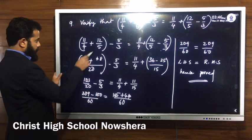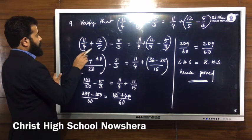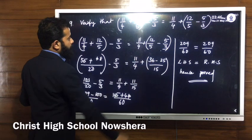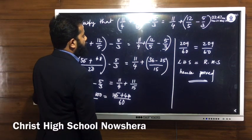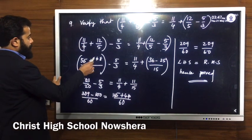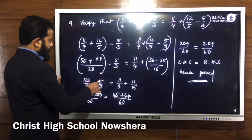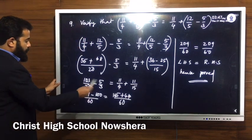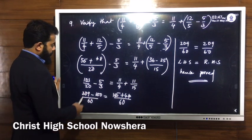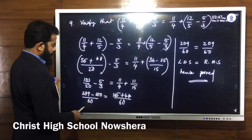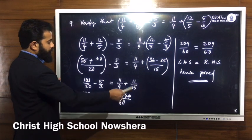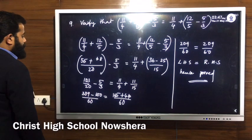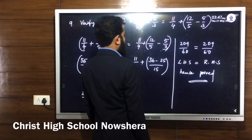Inside the bracket on the left: cross multiply 5 into 11 = 55 plus 4 into 12 = 48, giving 103 by 20, minus 5 by 3. Right side: 11 by 4 plus (3 into 12 = 36 minus 5 into 5 = 25) divided by 50, giving 11 by 4 plus 11 by 50. Then cross multiply: 3 into 103 = 309 minus 100 divided by 60. Right side: 15 into 11 = 165 plus 4 into 11 = 44, giving 209 divided by 60.